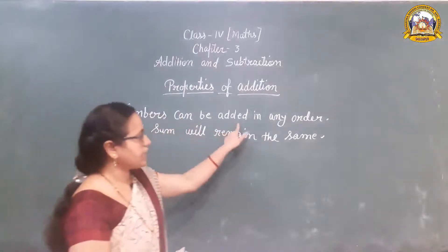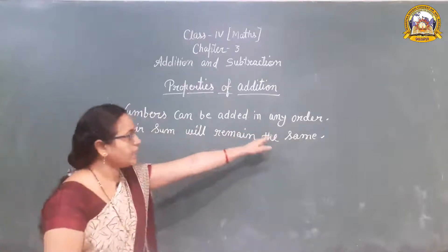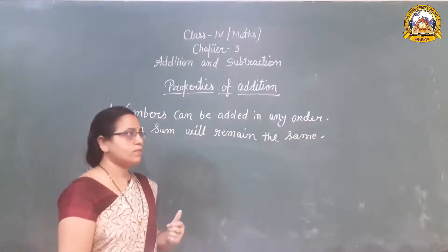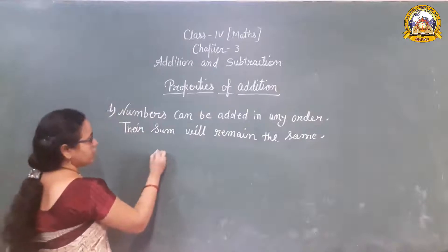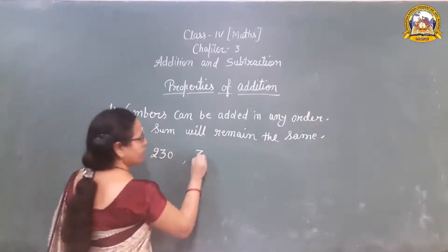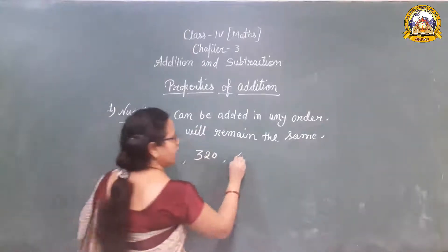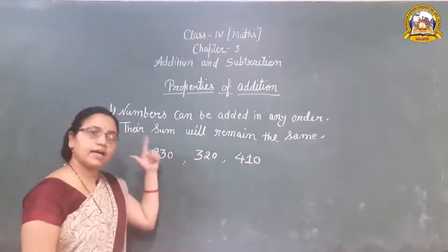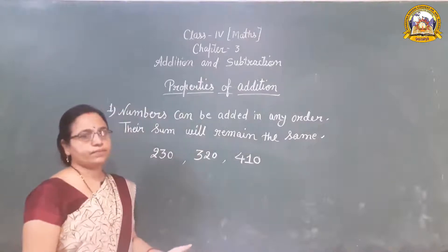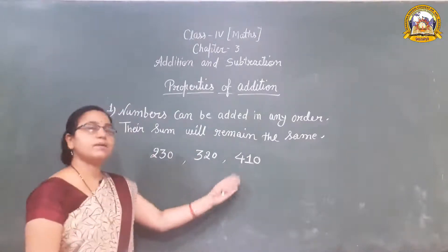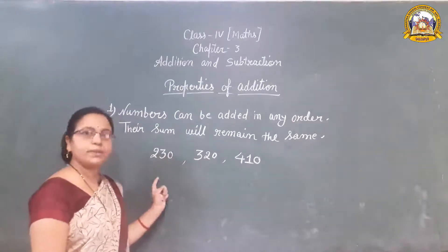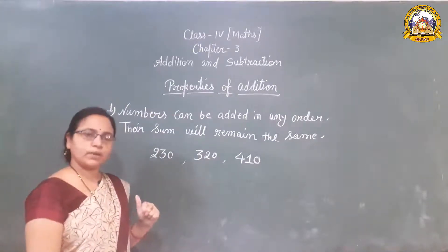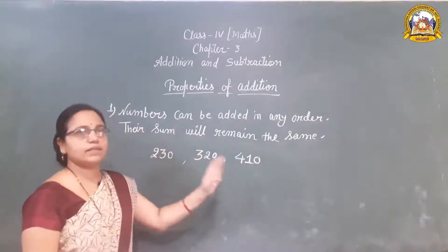Numbers can be added in any order and the sum will remain the same. What is the meaning of this? Suppose we have three numbers: 230, 320, and 410. We can arrange the three numbers in any order — any number on top, any on the bottom, any in the middle — but their sum will remain the same.